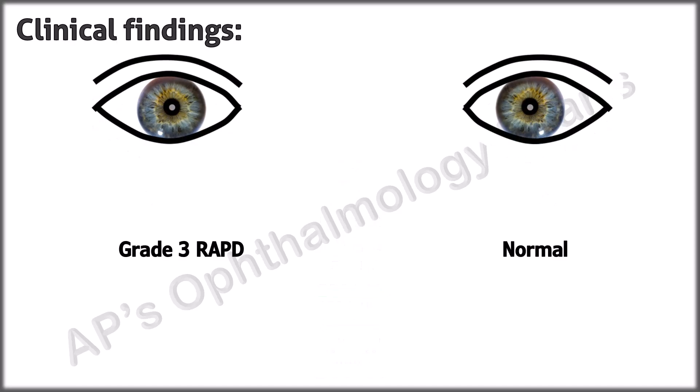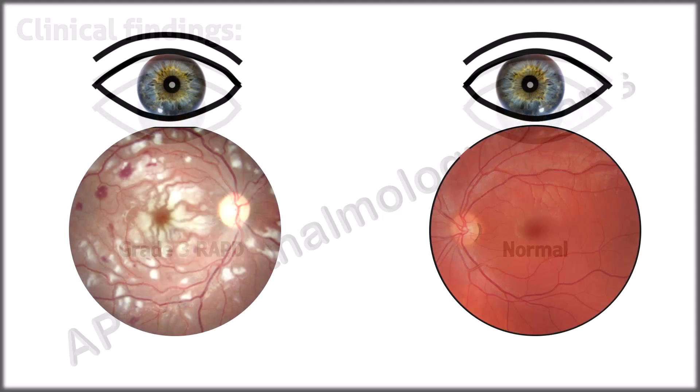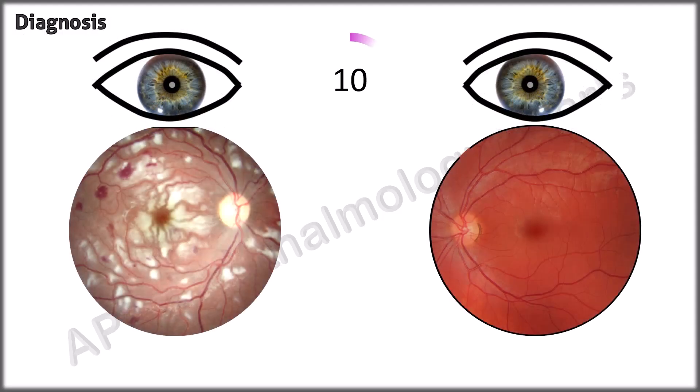Apart from a grade 3 RAPD in the right eye, the anterior segments and intraocular pressures were normal in both eyes. This was the fundus picture.